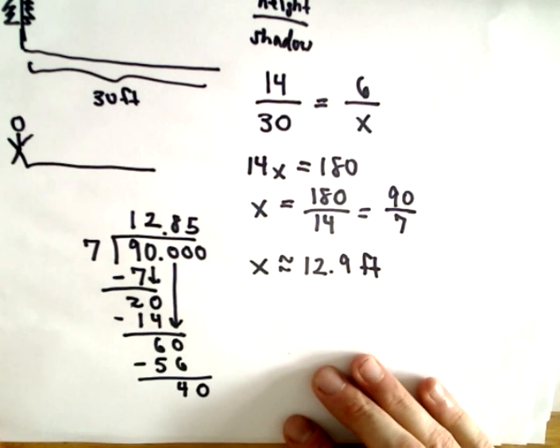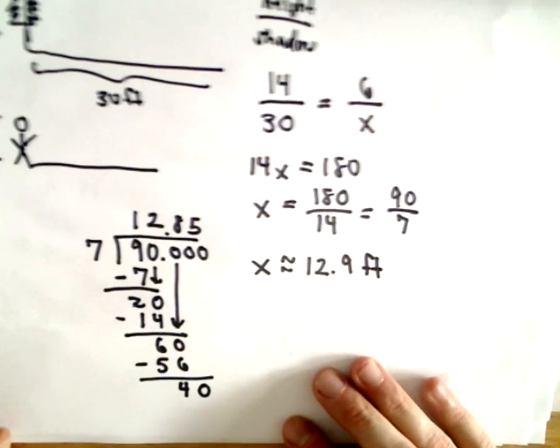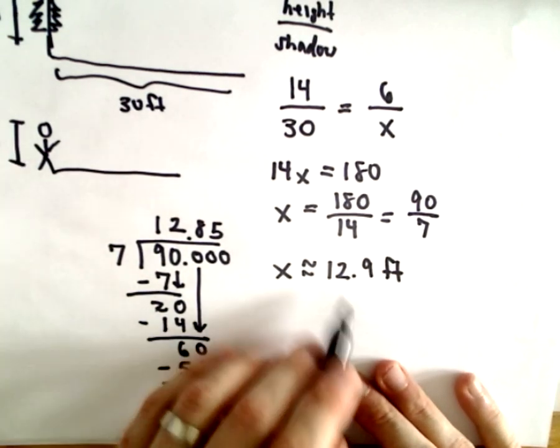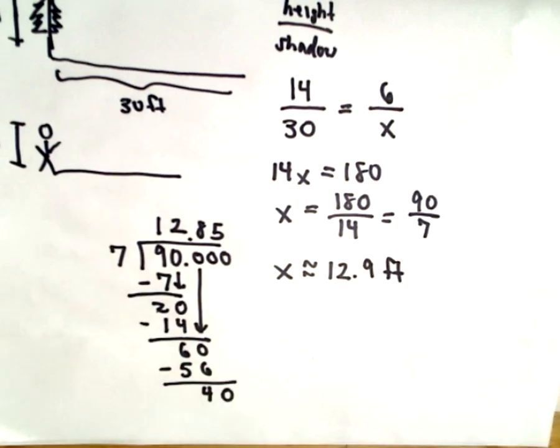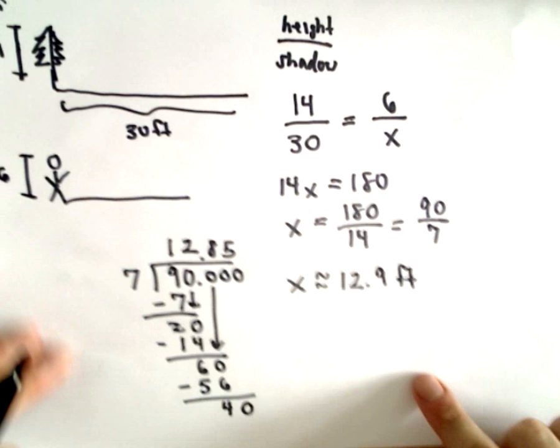I'm getting X to be roughly equal to 12.9 feet. So that agrees with what I said at the beginning. The shadow should definitely be more than twice the length of the person. The person was 6 feet tall. 12.9 feet for the length of the shadow. That seems reasonable to me. Just a basic proportion. Nothing too crazy.